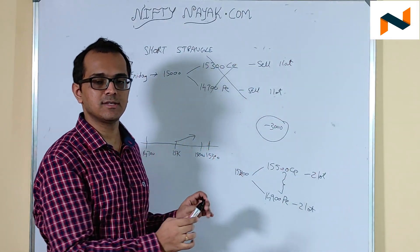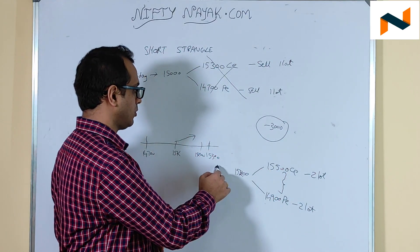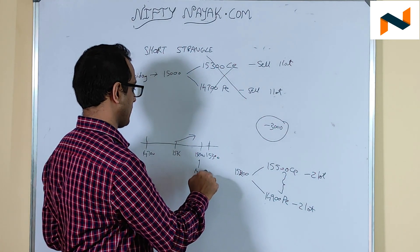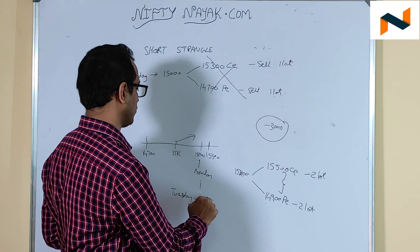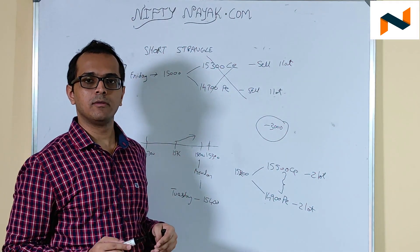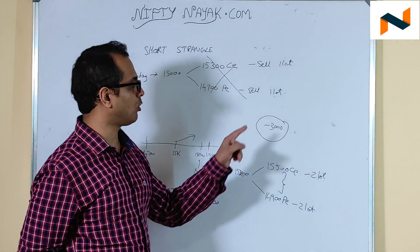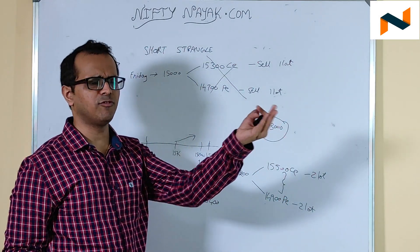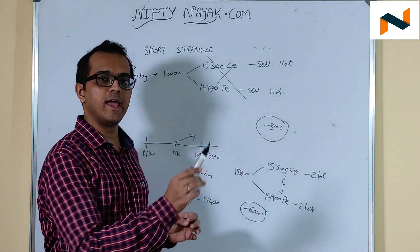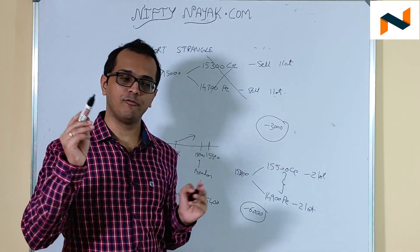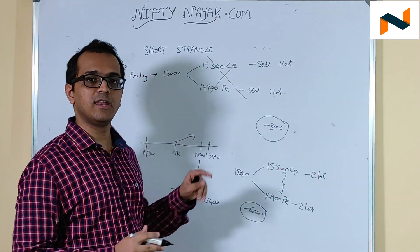So this is the theory — understand this first, then I will show you in the simulator. Now let's say this happened on Monday. On Tuesday, let's say Nifty went to 15,400 — there was another gap up. Obviously this second trade will also be in a loss. You book the loss again. So now you have booked minus 3,000 on the first leg and another 3,000 on the second leg — a total of minus 6,000. You book the loss and at 15,400 you execute another short strangle: selling the 15,700 call and the 15,100 put, but now selling 4 lots.